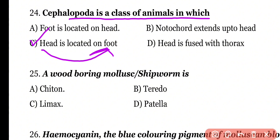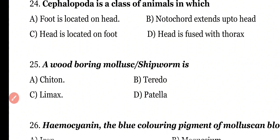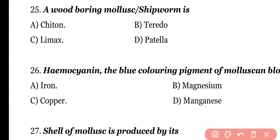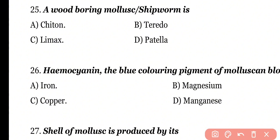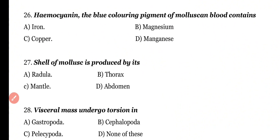Question number 25: A wood-boring mollusca or ship worm is which organism? Options: Chiton, Teredo, Limax, Patella. Correct answer is option B. Teredo is also called ship worm and is a wood-boring mollusca.